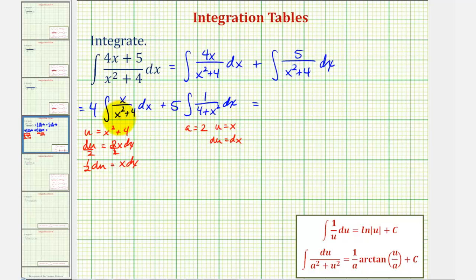Let's rewrite this first integral in terms of u. We'd have four times the integral of, our denominator would just be u, and then x dx is equal to one half du. We'll factor out the one half, and we have one du here.